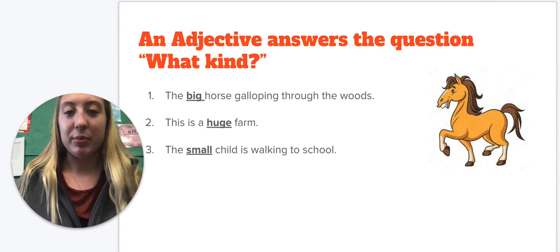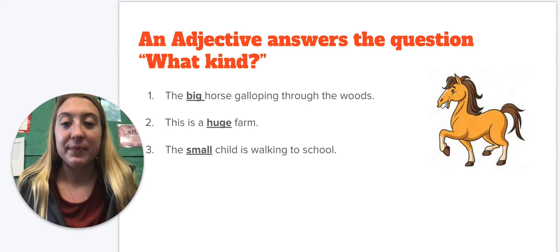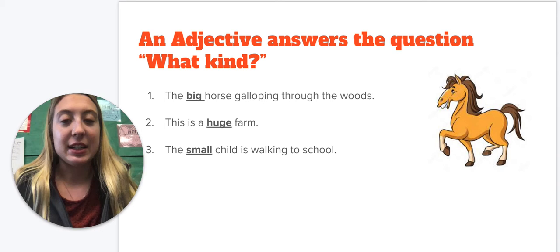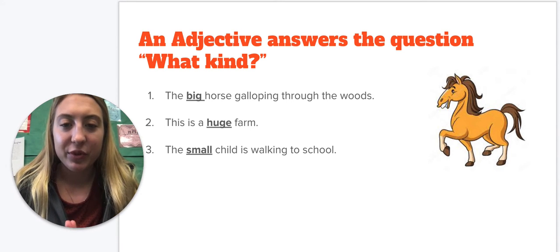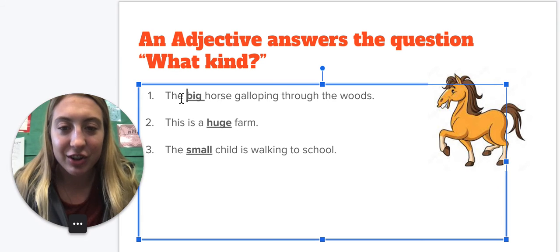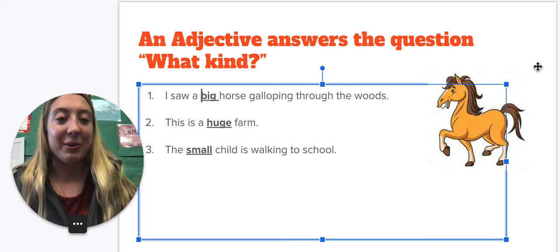So we're going to go through some examples. An adjective can answer the question, what kind? So if I read the sentence, the big horse galloping through the woods. Well, let's change it to, I saw a big horse galloping through the woods.